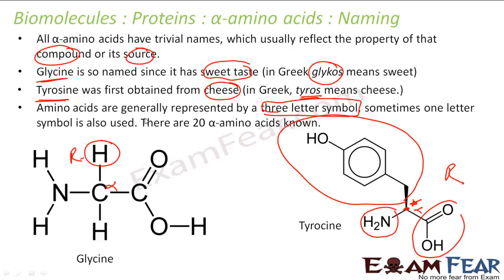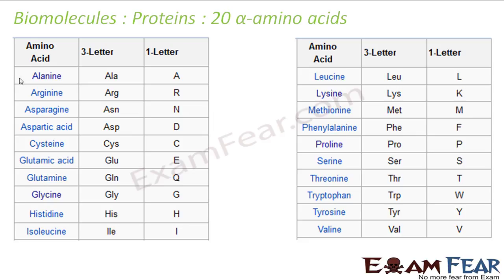Amino acids are generally represented by three-letter symbols and sometimes even one-letter symbols, because there are only 20 known amino acids. For example, alanine has the three-letter symbol 'Ala' and one-letter symbol 'A.' Glutamic acid is 'Glu' but uses 'E' as its one-letter code, because 'G' is already taken by glycine. So the one-letter symbol may not be the starting letter of the amino acid.